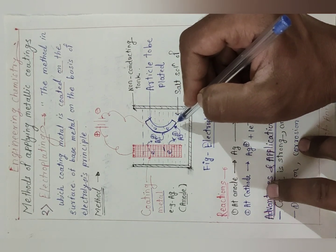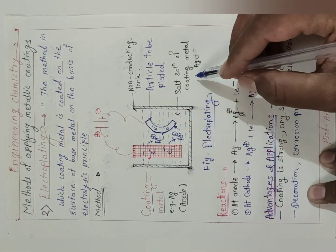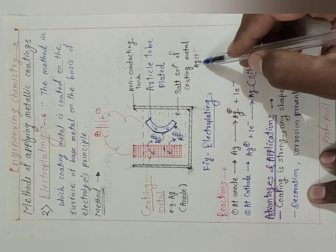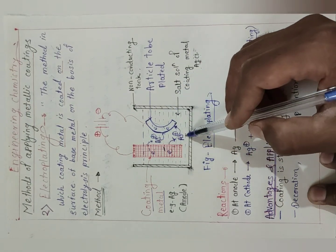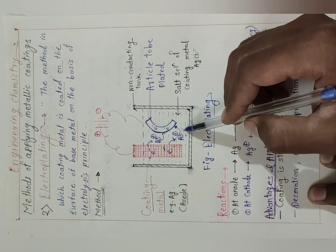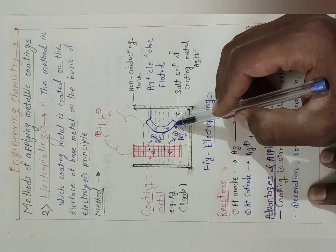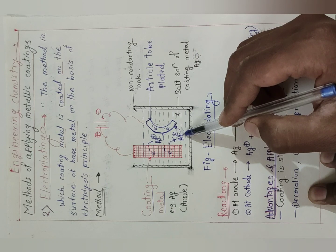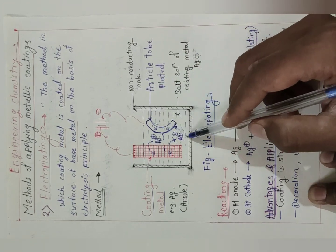In this way Ag gets deposited on the surface of the article on the basis of the electrolysis principle, as the article is placed in the salt solution of AgCl, that is Ag⁺ and Cl⁻. The quantity of metal ions (Ag⁺) that enter the solution — the same quantity gets deposited on the article. For example, if 50 Ag⁺ enter the solution, then all 50 Ag⁺ get deposited on the surface of the article.